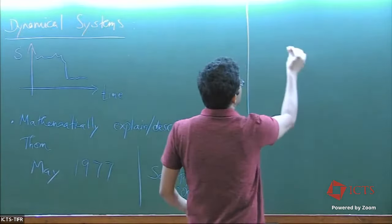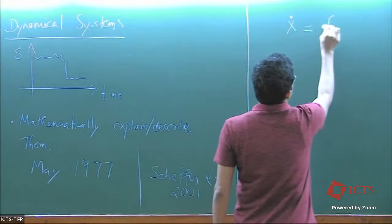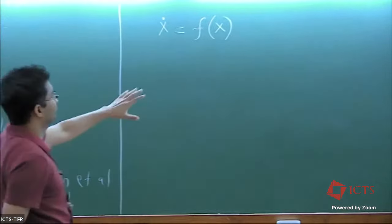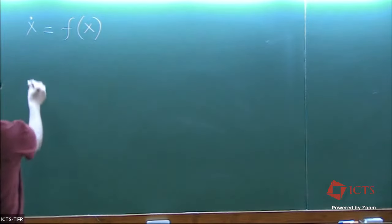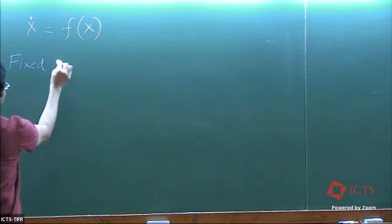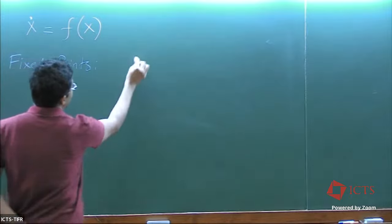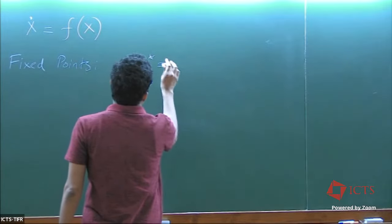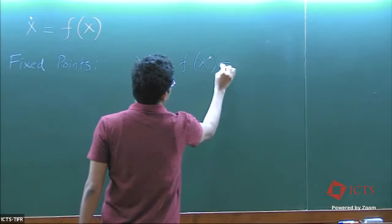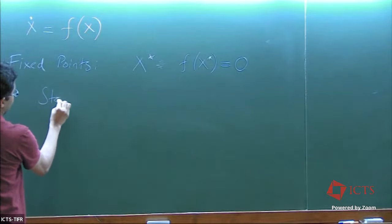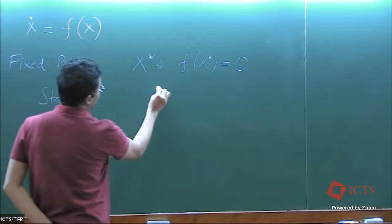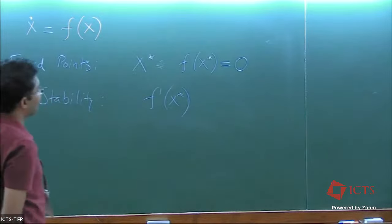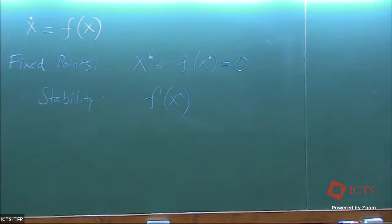The basic idea is that if there is some state variable x, we can write its dynamics in the form of a simple dynamical system. There are potentially many parameters here. We then use the notion of fixed points and stability. Fixed points are those where the system does not change anymore, found by solving f(x*) = 0. Then we look for stability by computing the slope of the rate function at the equilibrium point.